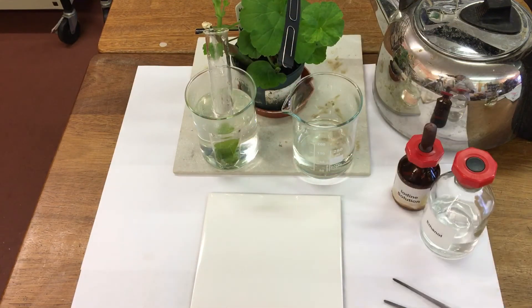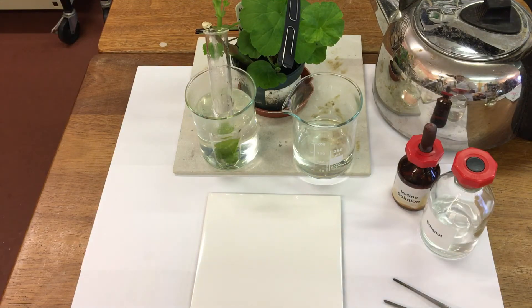And all the chlorophyll that's in the leaf will leak out into the ethanol and the colour will start to change.